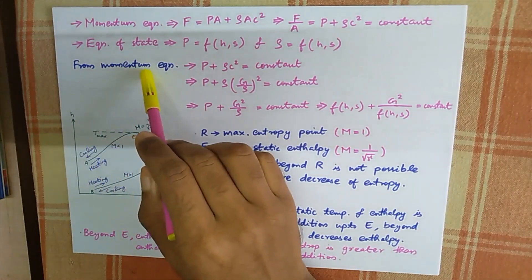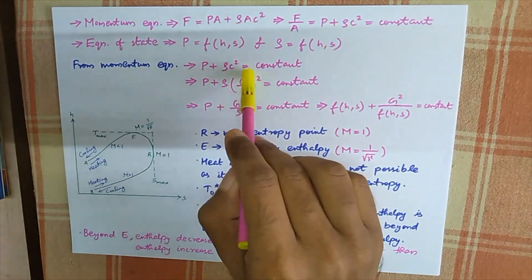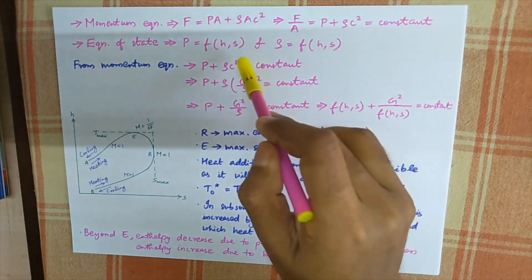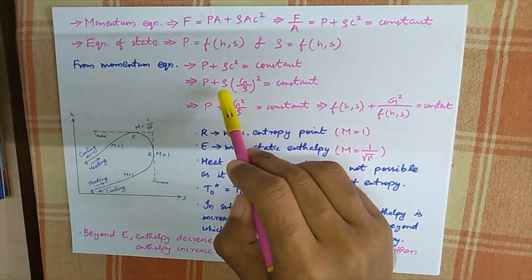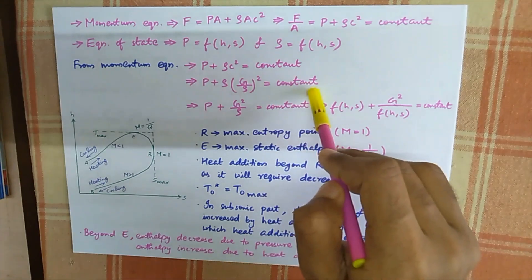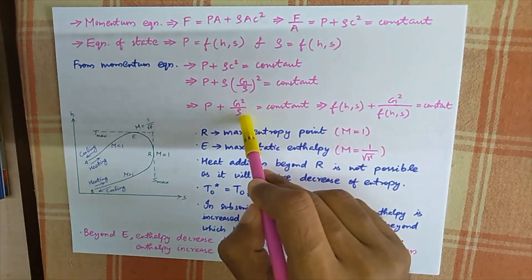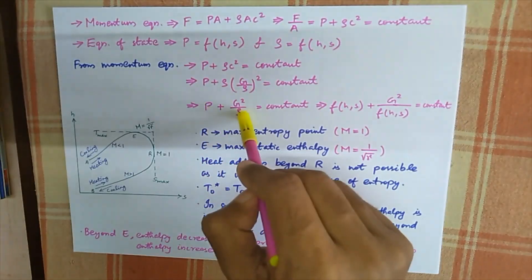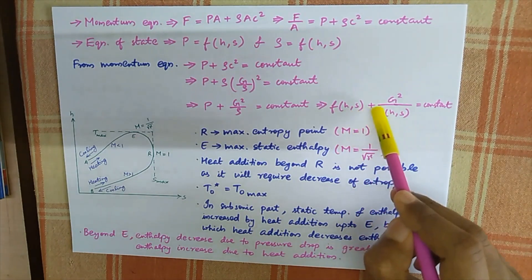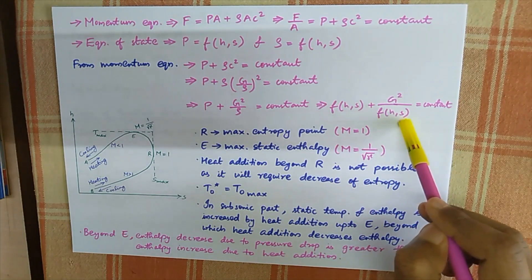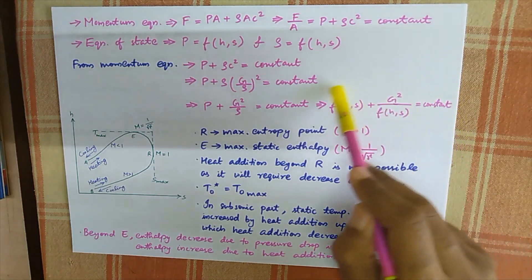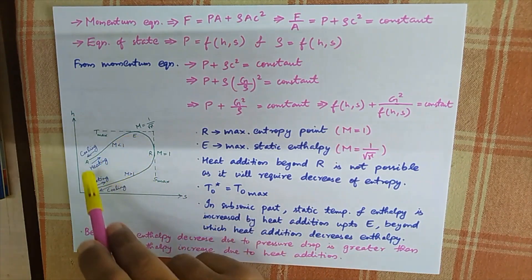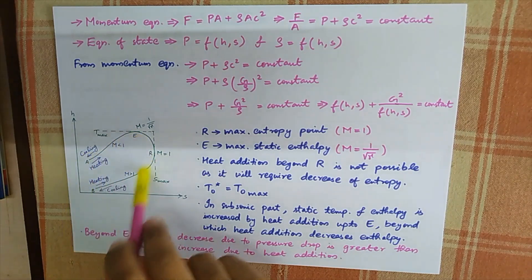From the momentum equation, P plus rho C squared equals a constant. Substituting C equals G divided by rho from the continuity equation, we get P plus G squared divided by rho equals a constant. Then substituting P and rho from the equation of state, we get: F(H, S) plus G squared divided by F(H, S) equals a constant. This is the equation of the Rayleigh line. If you plot this curve in an h-s plane, you get the Rayleigh curve.